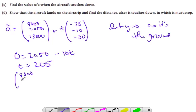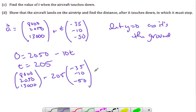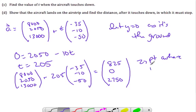So going back when t is 205, I want to find the aircraft's position. So I know (8000, 2050, 13000) plus 205 is my t, times (negative 35, negative 10, negative 50). So our first x value we get to be 825, we get 825, 0, I know y is zero, and then the next one 13000 gives us 2750. So this here is the point where it lands, meaning the aircraft lands.